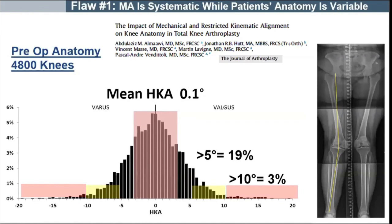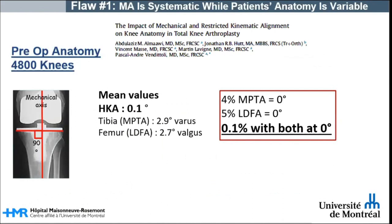Looking at the anatomy of 4,800 patients scheduled for total knee arthroplasty, we observed that the mean hip-knee angle is very near neutral. However, the anatomy variation is very wide, with 90% of cases having a hip-knee angle more than 5 degrees and 3% more than 10 degrees. Very few patients have native anatomy in neutral mechanical alignment. In our study, 4% of patients had a medial proximal tibial angle of 0 degrees, 5% had a distal lateral femoral angle of 0 degrees, and only 0.1% had both angles at 0 degrees.